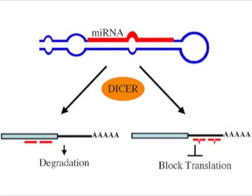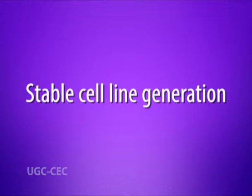RNA molecules that take part in RNAi pathways include small interfering RNAs (siRNAs), which are short 20 to 25 base pair double-stranded RNAs, and microRNAs (miRNAs), a separate class of short single-stranded RNAs of 20 to 22 nucleotides.